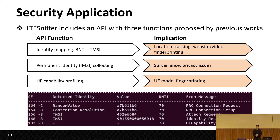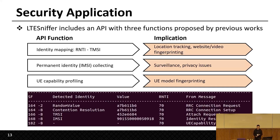We developed a security API with three functions. The first is identity mapping, which maps between radio identity RNTI and the temporary identity TMSI. RNTI-to-TMSI mapping is the starting point for location tracking and video fingerprinting. The second function is permanent identity IMSI collecting, which can lead to surveillance or privacy issues. The third function is UE capability profiling, which can lead to UE model fingerprinting.